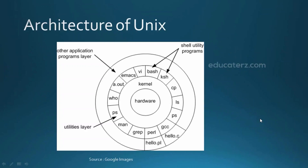UNIX has a simple and modular architecture. The lowest level is hardware, which has all the components like the CPU, data disk, and other supporting hardware. On top of this, the kernel is present. The kernel is the heart, or core component, of the UNIX operating system. It enables your application to talk with the hardware, and all processes interact through the kernel to the hardware.